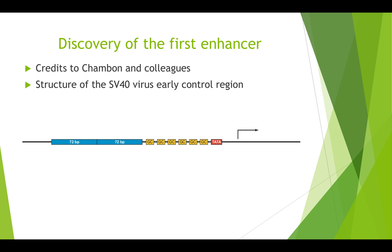The first enhancer was discovered in the 5-prime flanking region of Simian Virus 40, or SV40. This DNA region was noticed because of its 72 base pair sequence, called the 72 base pair repeat, as shown in this figure. You can see the structure of the SV40 early control region, with the transcription start site, the TATA box, six GC boxes, and the 72 base pair repeats. This is a general description of where the enhancer resided for this particular promoter.